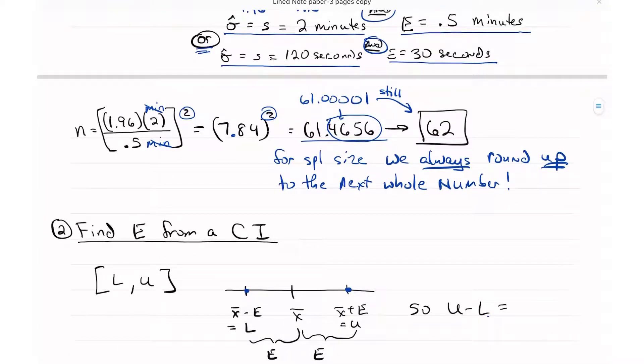Now once I've been given a confidence interval, I can find E even though E is not given to me. I can figure it out because we go back to the formula for the confidence interval. The lower number is X bar minus E, X bar is in the middle, and then the upper limit is X bar plus E. Since I'm taking X bar and subtracting E, the difference between L and X bar, that difference is E.